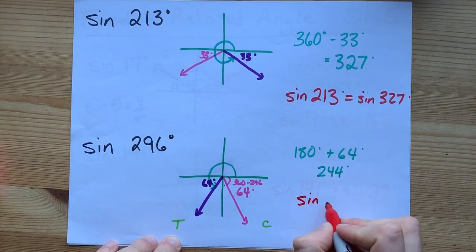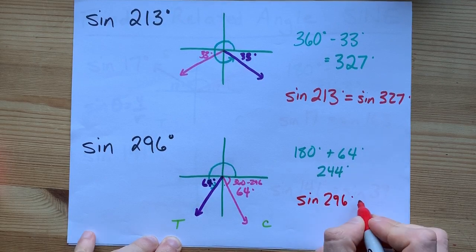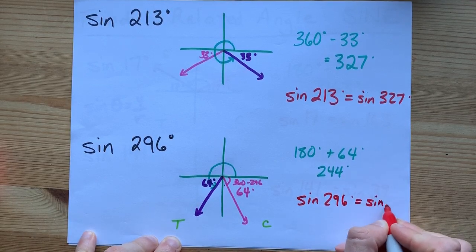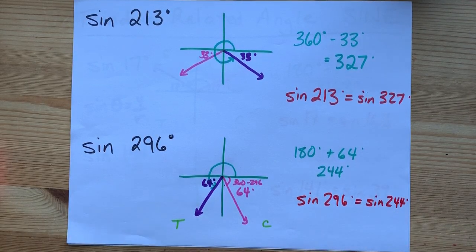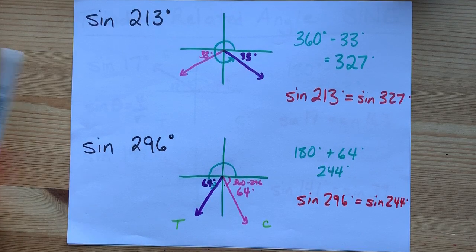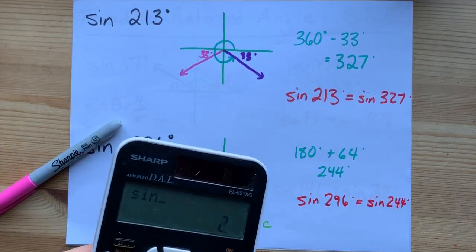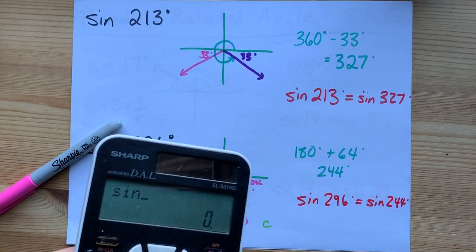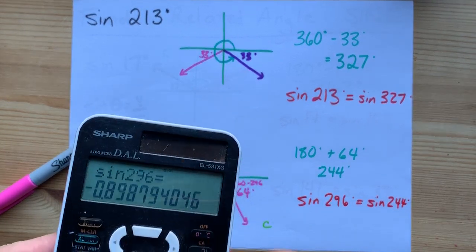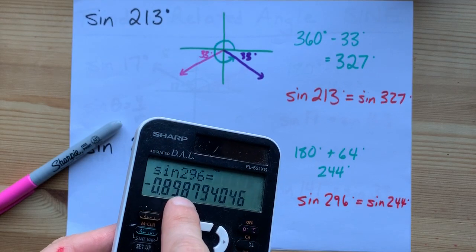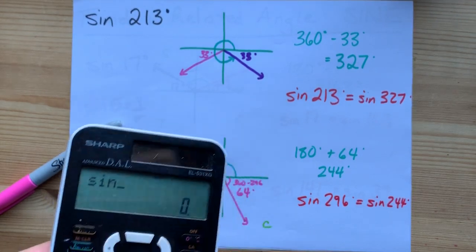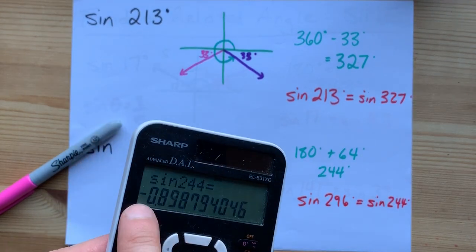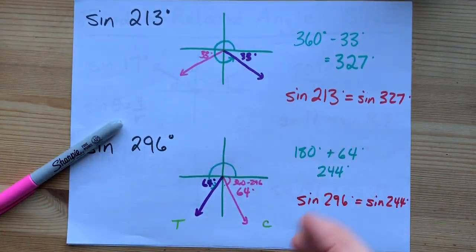Final answer: sine of 296 degrees is equal to the sine of 244 degrees. Cool. Sine 296. Ah, I typed the wrong number. Sine 296, negative 0.898. Sine 244, negative 0.898. Beautiful.